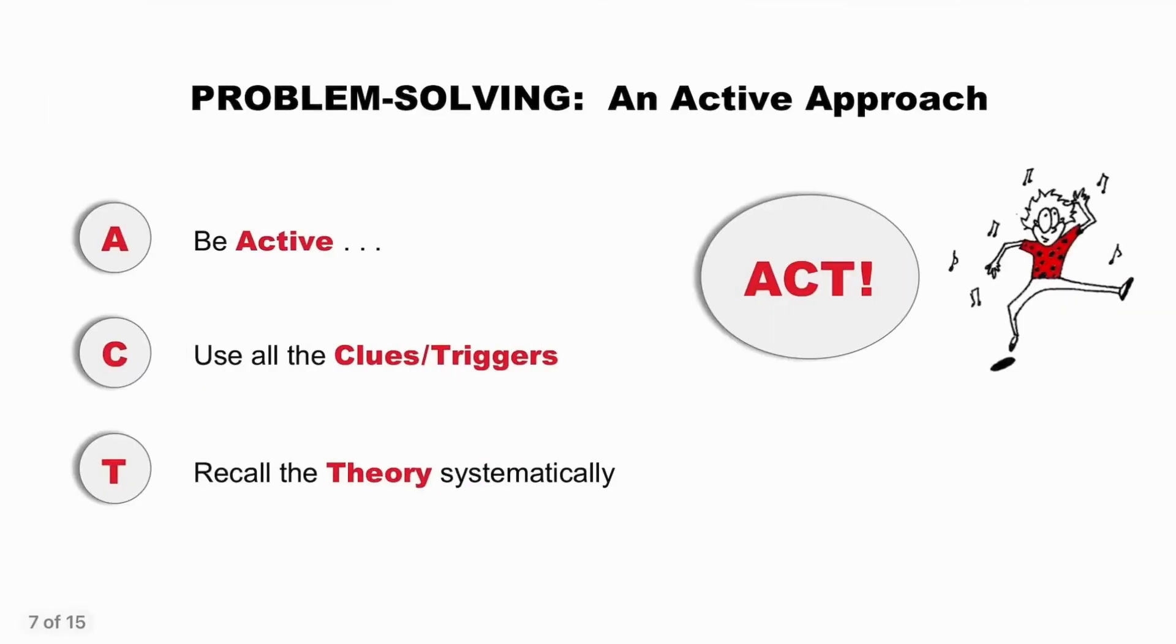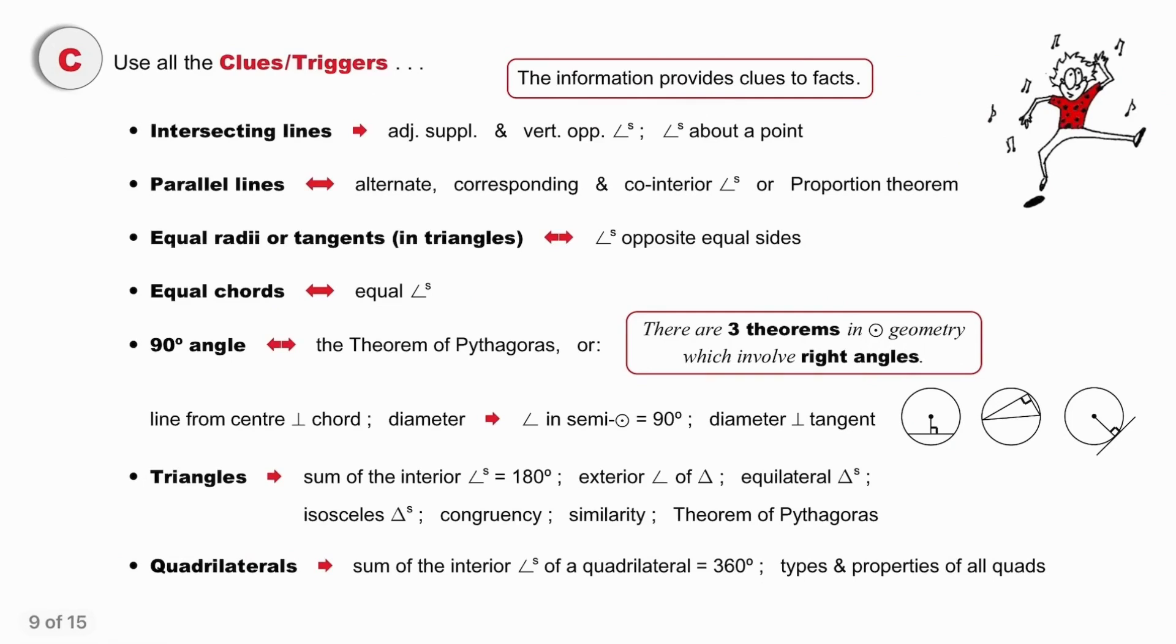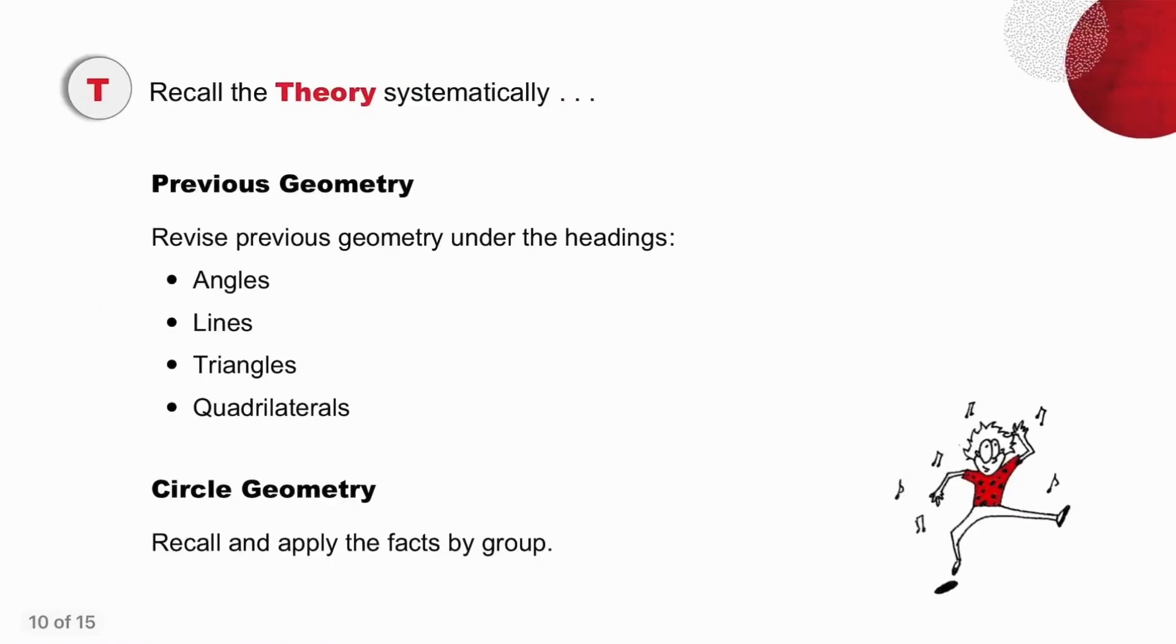A useful acronym is ACT. Be active, use the clues or triggers, and recall the theory systematically. We'll look at that in more detail. Mark all the information on the diagram so that you remember to use it. When you see a clue, remember all the facts you know about that clue. You might want to pause the video just to check all of these. Recall all the theory you have ever learnt so that you can apply your knowledge to each geometry problem.